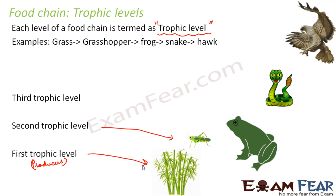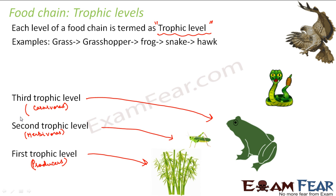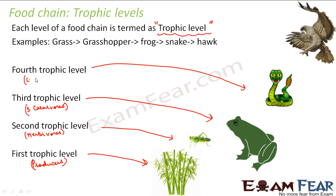Then comes the third trophic level — the frogs. Basically, the second trophic level was the herbivores, and in the third trophic level we have the carnivores — maybe we can call them small carnivores or secondary consumers. Then comes the fourth trophic level, which is the snakes — slightly larger carnivores. And then comes the hawk, which is the fifth trophic level. So as the level keeps increasing in a food chain, we call them first trophic level, second trophic level, third trophic level, and so on.